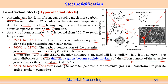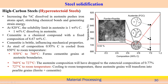Further cooling from 727°C to room temperature converts the austenitic grains to pearlite grains (ferrite + cementite with 0.77 wt% C). The final microstructure is a mixture of pearlite grains plus alpha ferrite grains.